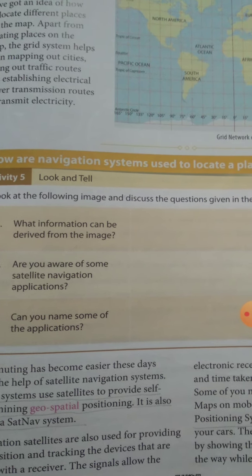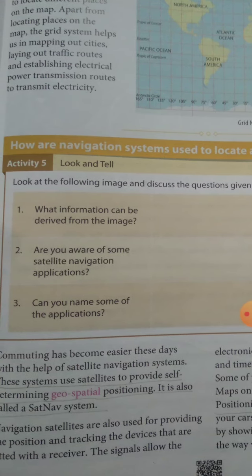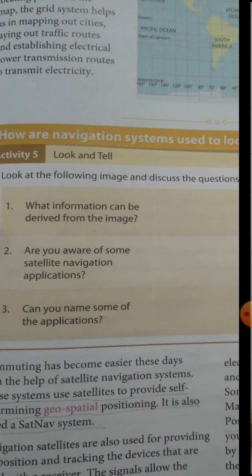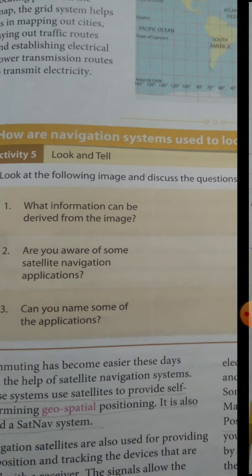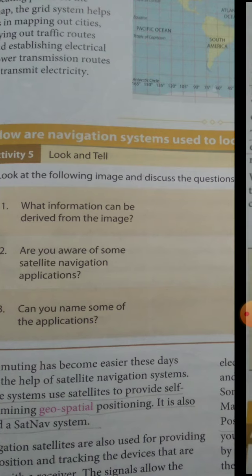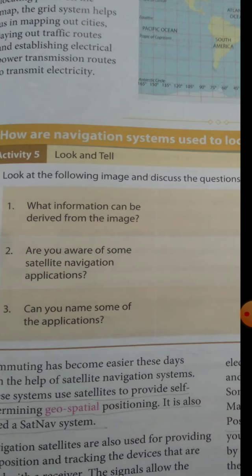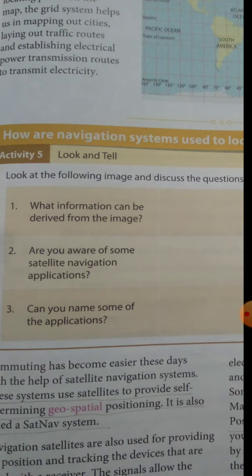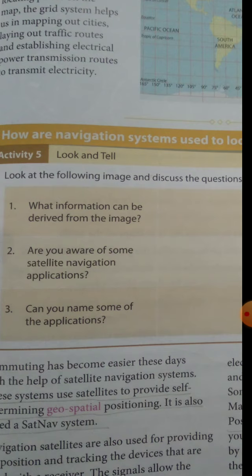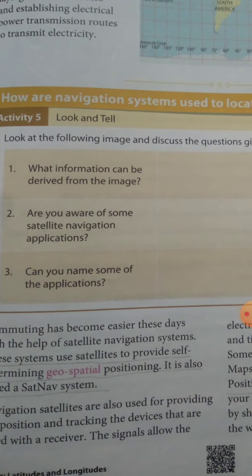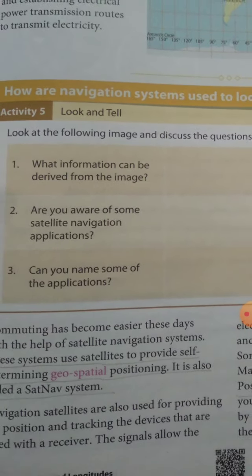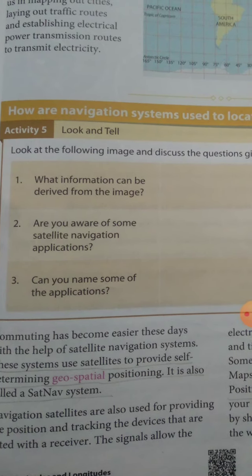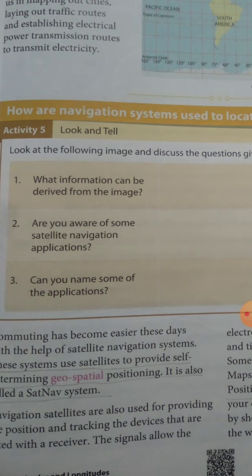Next we are going to study how our navigation system is used to locate a place. Navigation has become very easy these days with the help of satellite navigation systems. This system uses satellites to provide self-determining geospatial positioning. It is also called the SatNav system. Navigation satellites are also used for providing position and tracking devices that are fitted with a receiver. The signals allow the electronic receiver to calculate the exact distance and time taken to reach a particular destination.